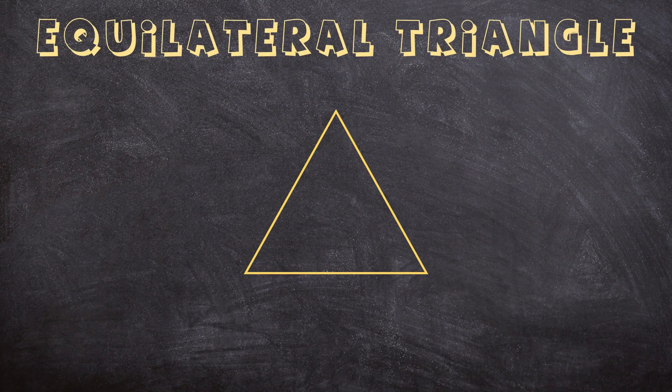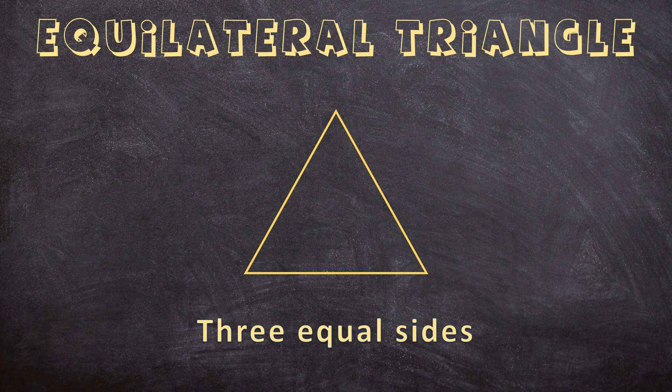For the first triangle, we have an equilateral triangle. For this type of triangle, all the sides are equal. So when this side is 10 cm long, that means this side will also be 10 cm long and this side will also be 10 cm long. All of the sides will be exactly equal.